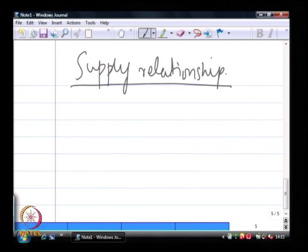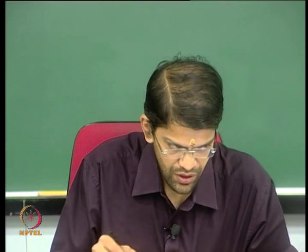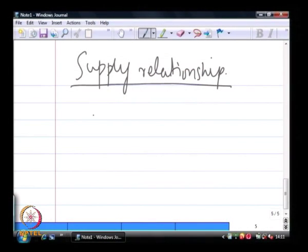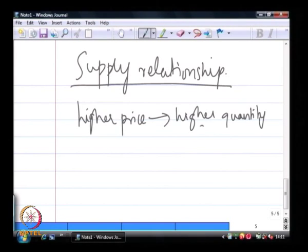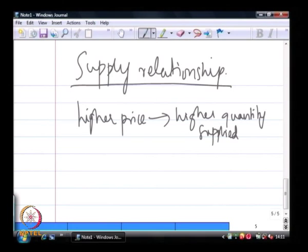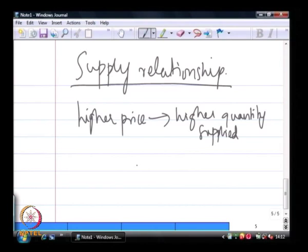The supply relationship is straightforward, except it is opposite to the demand relationship. The law of supply demonstrates the quantities that will be sold at a certain price. Unlike the law of demand, the supply relationship is an upward-sloping one — higher the price, higher the quantity supplied. The rationale is that producers will supply more at a higher price because from a producer's perspective, selling more at higher prices means higher revenues.